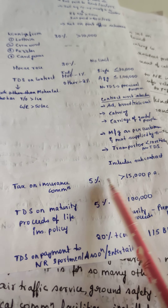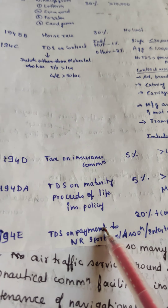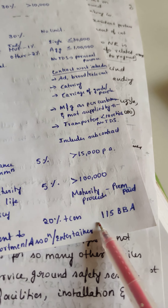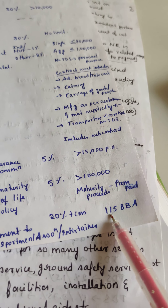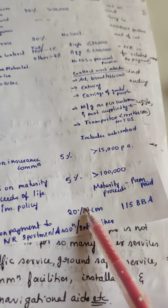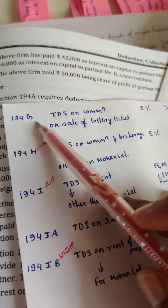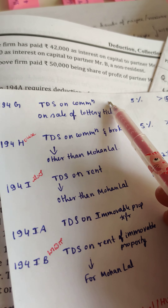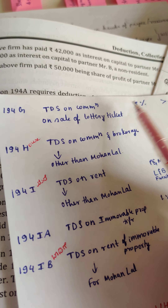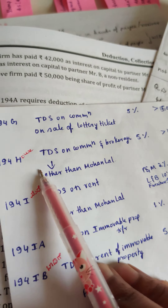That is 194C. Then 194D — what happens? Insurance. Insurance against death. Remember it like that: D for death. So 194D is tax on insurance commission. The rate is 5%, and TDS applies only when the commission is greater than 15,000 per annum. Only then TDS will be deducted.